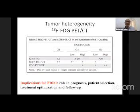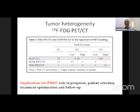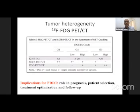It has been shown that neuroendocrine tumors have tumor heterogeneity, so when planning PRRT we always ask the patient to undergo an FDG PET as well. Lower-grade tumors with Ki-67 grade one or two will have more SSTR-evident lesions compared to FDG PET, whereas grade three tumors will have high FDG uptake and low SSTR expression. This has implications for treatment, prognosis, patient selection, and follow-up.